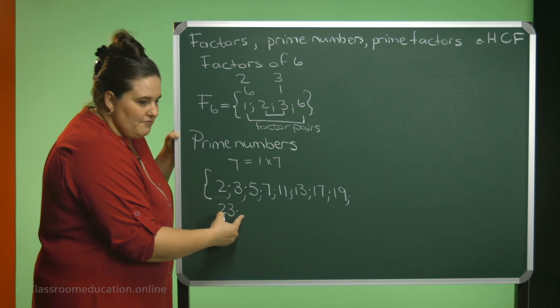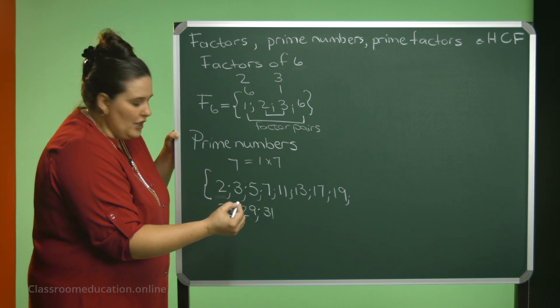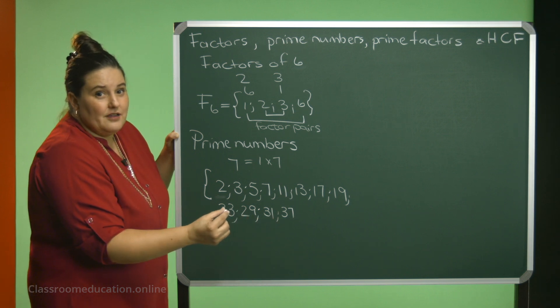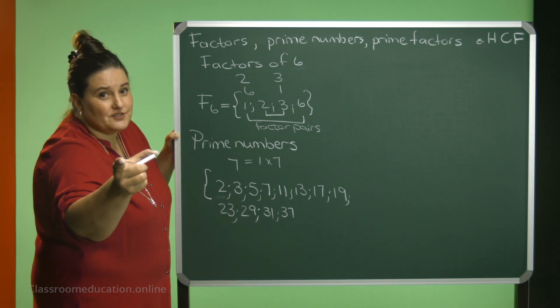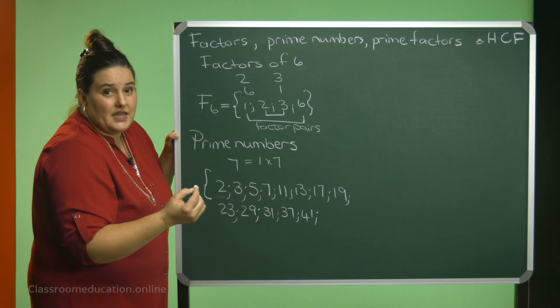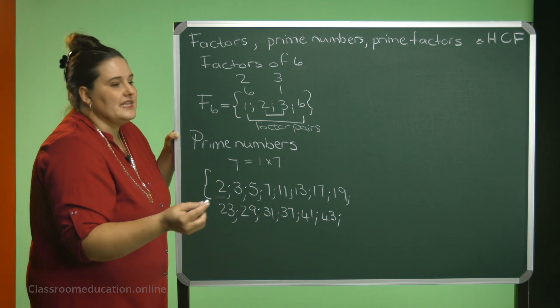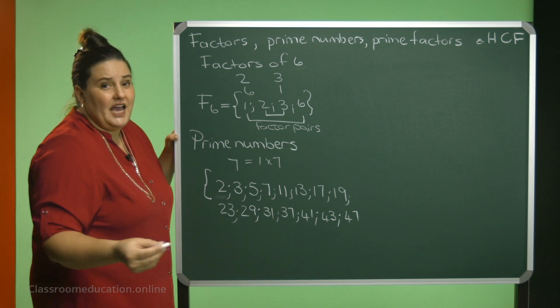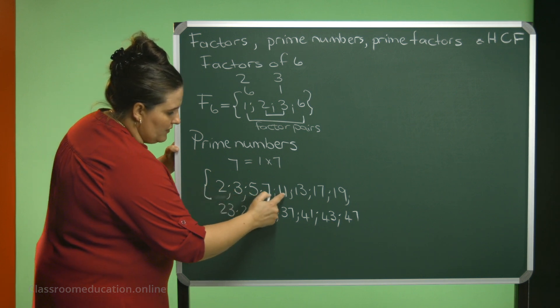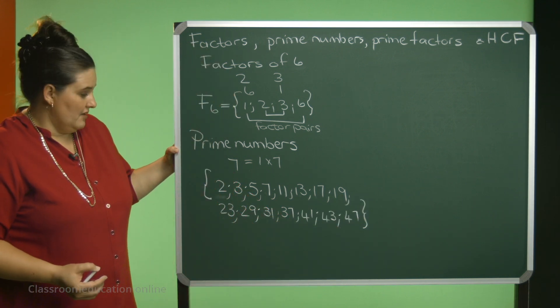25? No. 27? No. 29? Yes. 31? Yes. 33? No. 35? No. 37? Yes. 39? Careful. 3 times 13 is 39. So, no. 41? Yes. 43? Yes. 45? No. 47? Yes. 49? No. 7 times 7 is 49. Okay. I think that we have now 15. So, there's the first 15 prime numbers that I have.